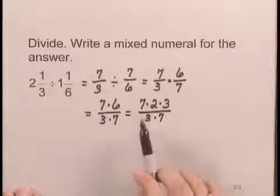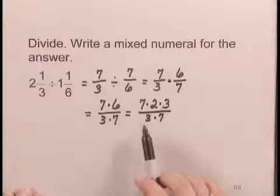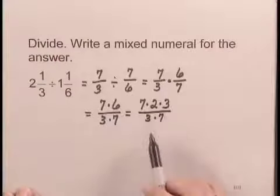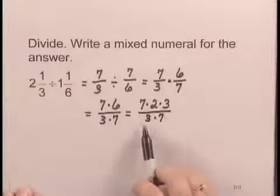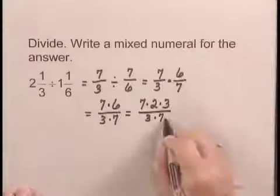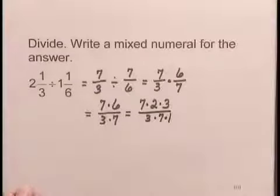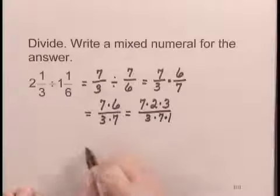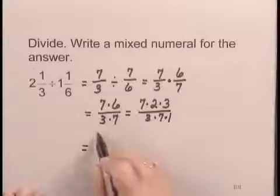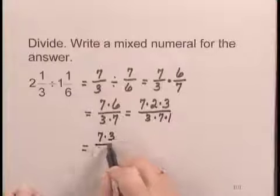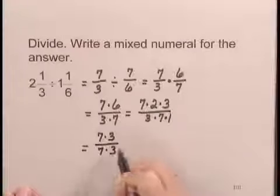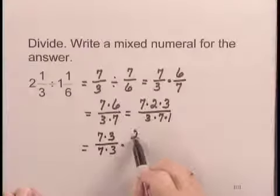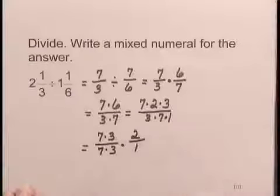Now I need to factor out a 7 and a 3 in the numerator and a 7 and a 3 in the denominator. I notice that when I factor out the 7 and 3, I will be left with nothing in the denominator, so I'm going to add a factor of 1 so you can see how this works. I have 7 times 3 over 7 times 3 times 2 in the numerator and 1 in the denominator.